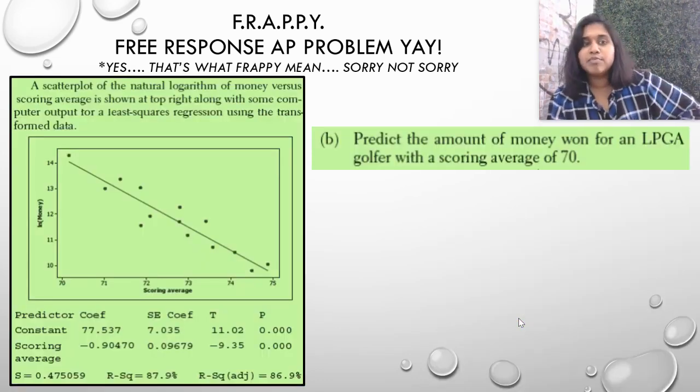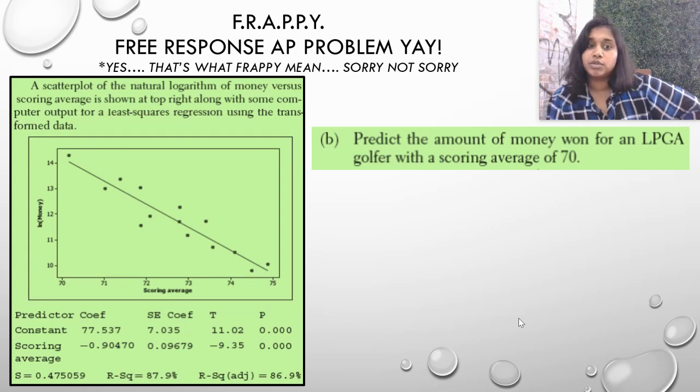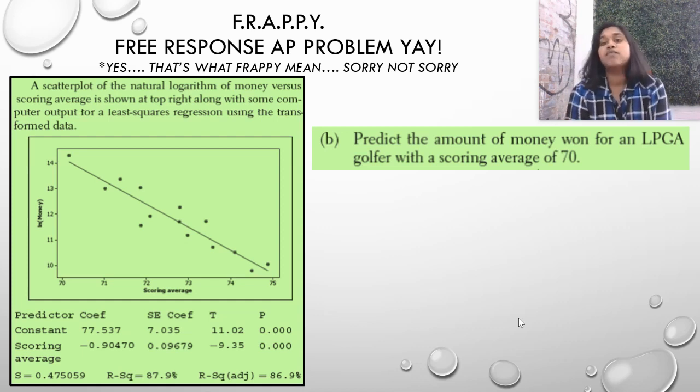So, let's go to question B. The scatterplot of the natural logarithm of money versus scoring average is shown. So, what did they do? They took the natural log of the money. Okay. So, this is a concept. We transformed the information and look what happened.